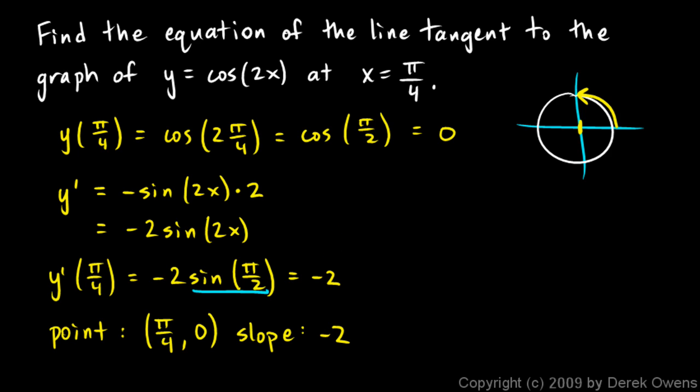So I can use the point slope form of the equation for a line. Just y minus y1 equals m times x minus x1. And we'll use those values. So I have y minus 0 equals negative 2 times x minus π over 4. And that's it. That's the equation of the line.